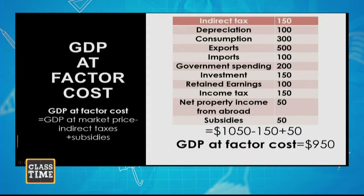To calculate GDP at factor cost, we make adjustments for taxes and subsidies. Since subsidies lower prices and taxes increase them, we do the opposite: we add subsidies and subtract taxes. Taking GDP at market price of $1,050, we subtract taxes of $150 and add subsidies of $50. GDP at factor cost is therefore $950.